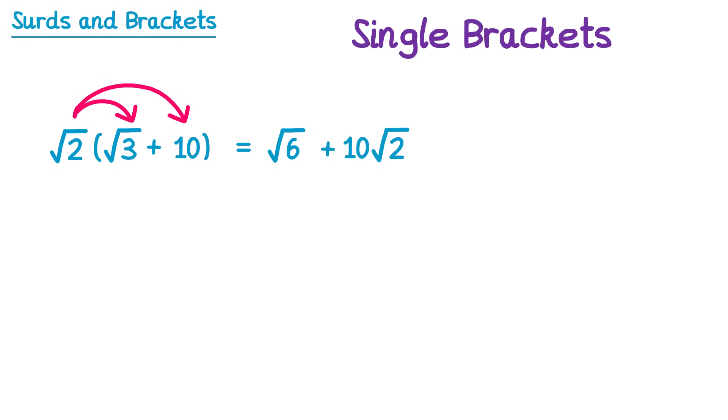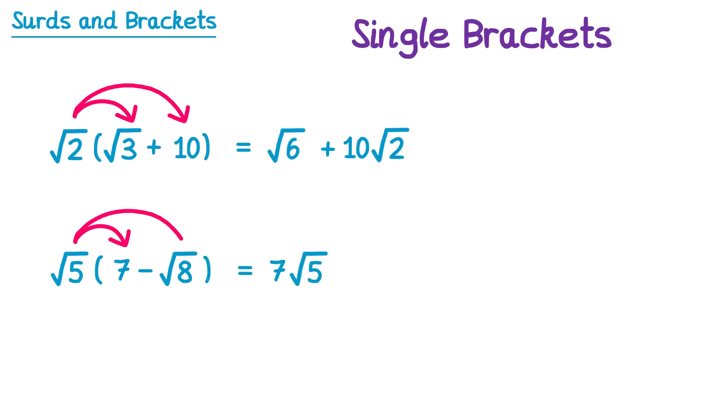Let's try another one. This time we're going to multiply the square root 5 by the two terms inside the bracket. Square root 5 times 7 — that's a surd multiplied by an integer, so we just put that 7 in front of the root 5, giving 7 root 5. Then we need to do root 5 times negative root 8. Using our surd rules, root 5 times root 8 is root 40, so this is negative root 40.